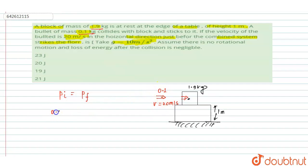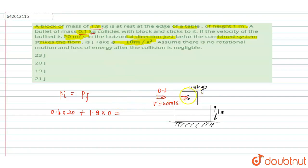Initial momentum equals m1·u1 plus m2·u2. That is 0.1 kg times 20 m/s plus 1.9 kg times u2, where u2 equals 0. After the bullet sticks to the block, the total mass becomes 1.9 plus 0.1, which equals 2 kg.